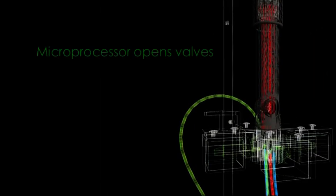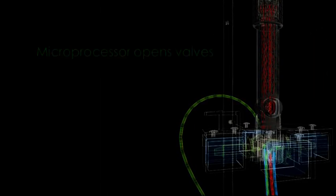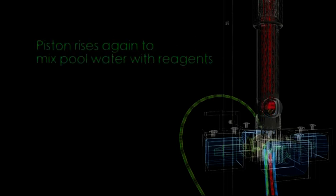It automatically detects water flow and then itself primes. The microprocessor then opens the valves and raises the piston to deliver a prescribed amount of two reagents to the chamber. The piston then rises again to draw in and thoroughly mix the exact amount of pool water with the reagents.